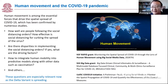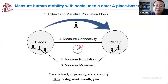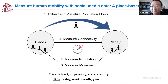Those questions are especially relevant now since we see the spreading of the Delta variant. So we take a place-based view, trying to think about how we can measure human mobility using social media data — specifically, we are using Twitter data.